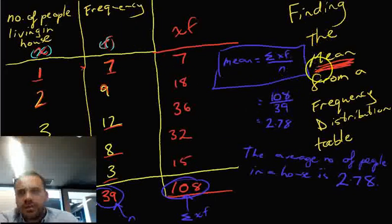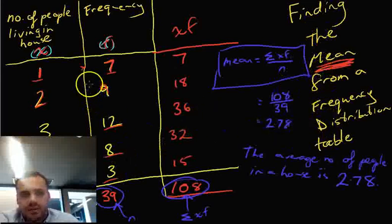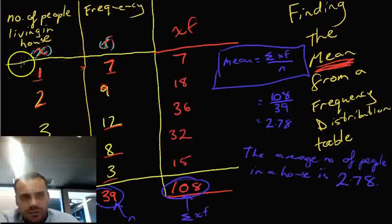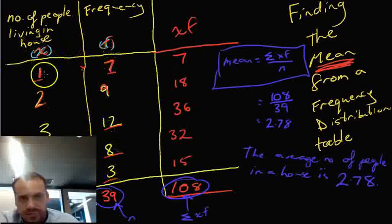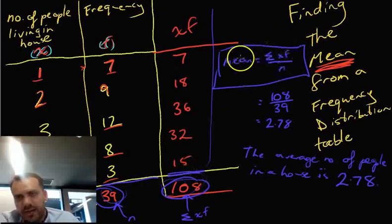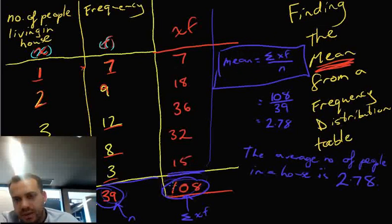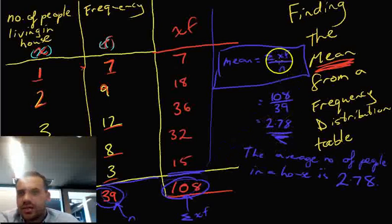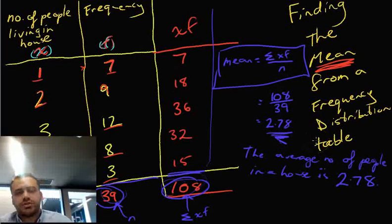Okay, so this has been finding the mean from a frequency distribution table. It's fairly easy. Find your X and your F column. Draw a third column called the XF column. Fill in your totals here and here. This number and this number. And then just use this formula. Mean is equal to this number, sum of XF, divided by this number, which was N. That gives us a total of 2.78. This is calculating the mean from a frequency distribution table.